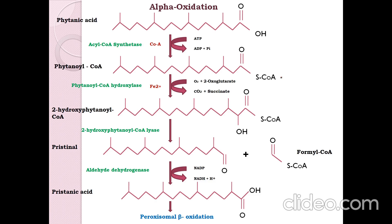Let us see in detail about the alpha oxidation process. In the first step the phytanic acid is activated to form phytanoyl CoA by the enzyme acyl CoA synthetase where CoA is attached to phytanic acid to form phytanoyl CoA and that is utilization of ATP.